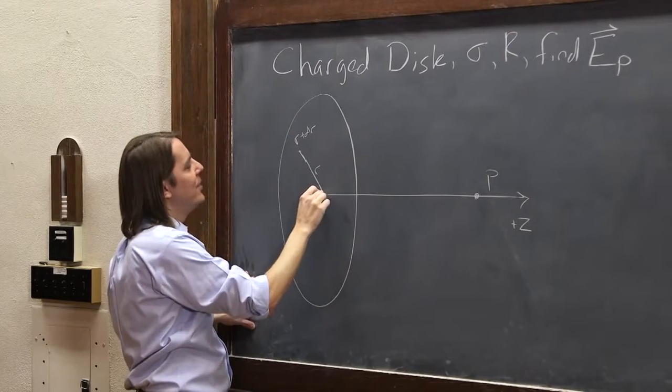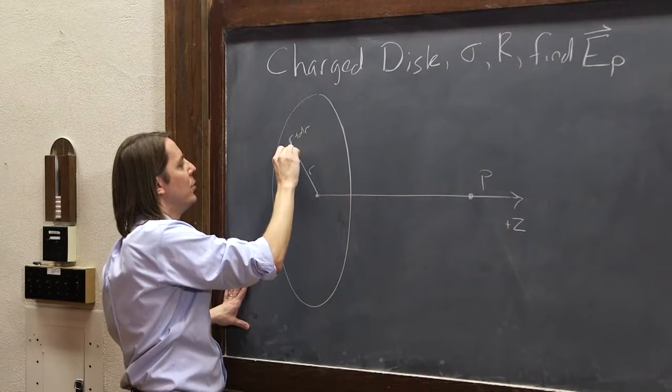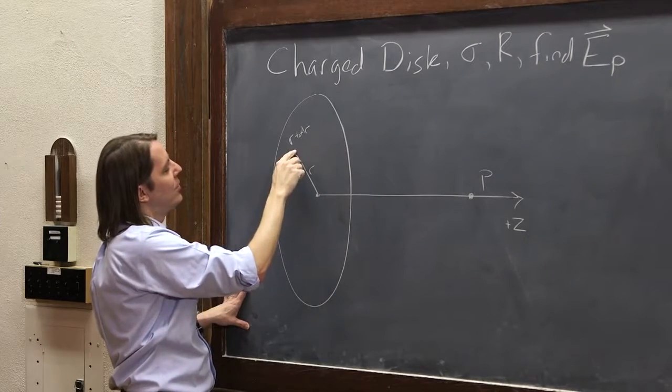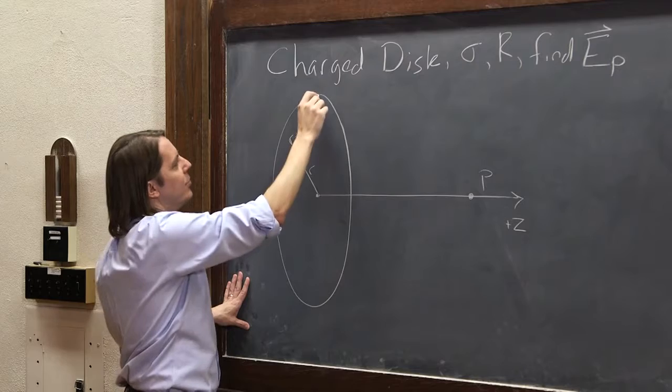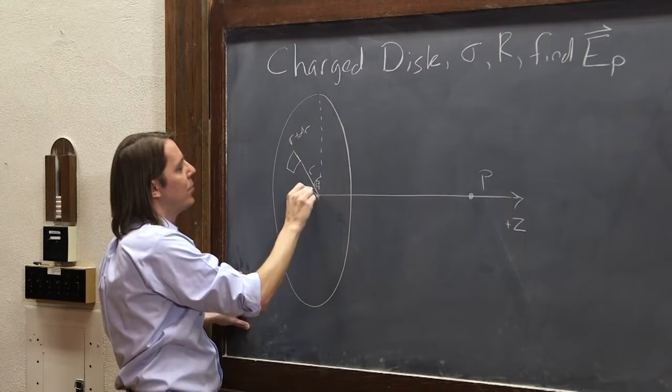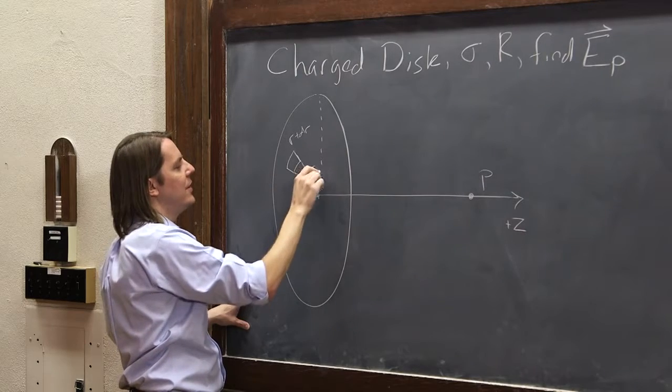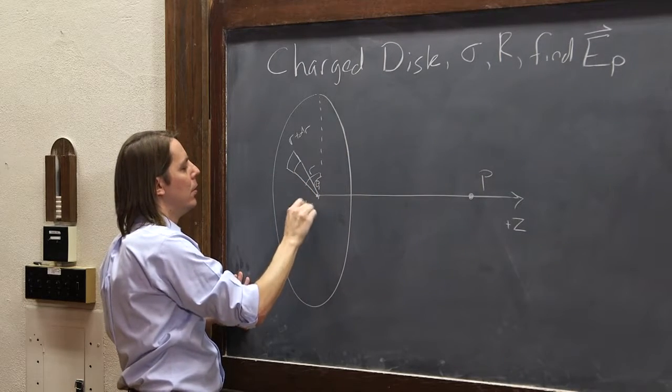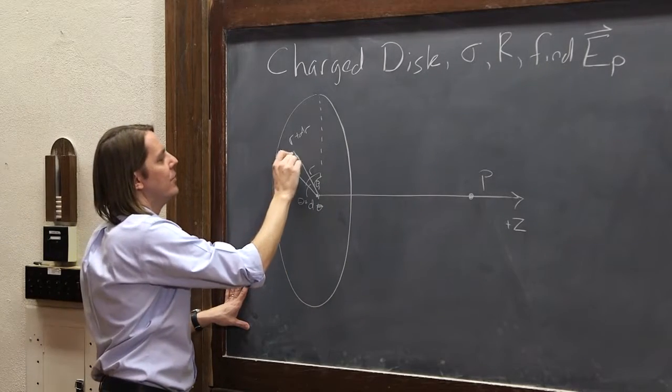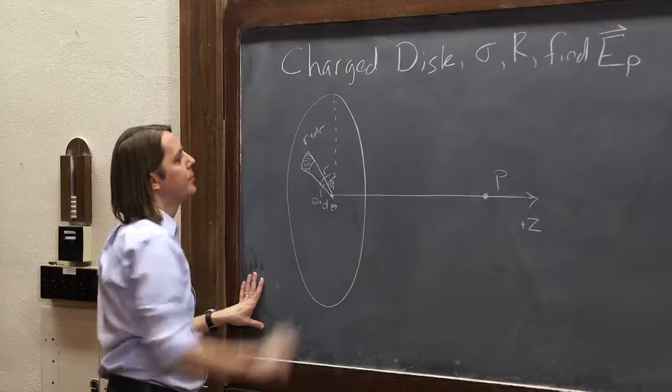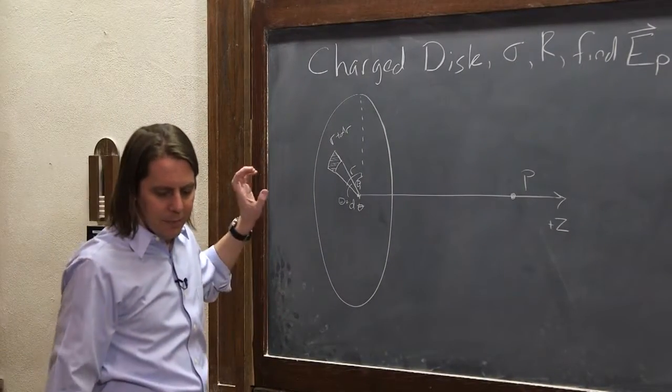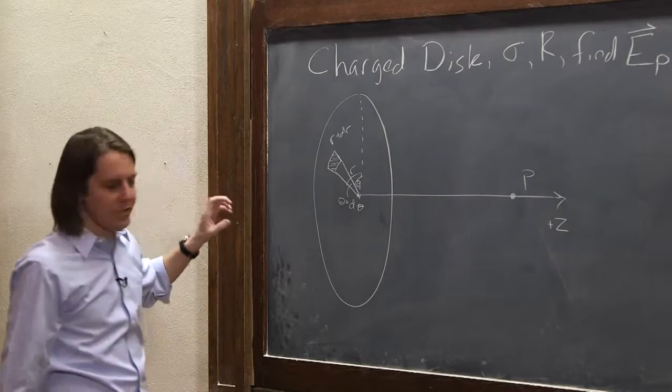So r to r plus dr. And then we're going to move in theta. We're going to go from this point theta to a little point going over theta. So we went r, r plus dr, and this is theta, where theta would be measured from here. And then we went over to theta plus d-theta. When we do that, we set up a little area. This is our little dq. Just like we drew it big before. So that's the charge we're going to deal with.